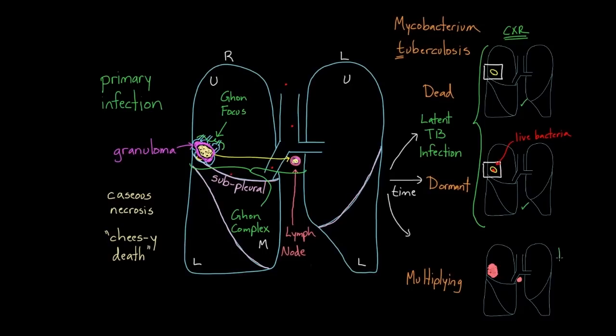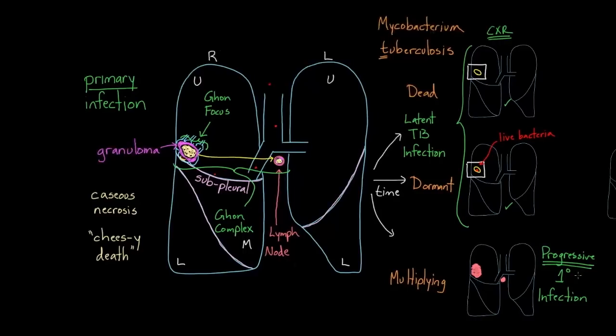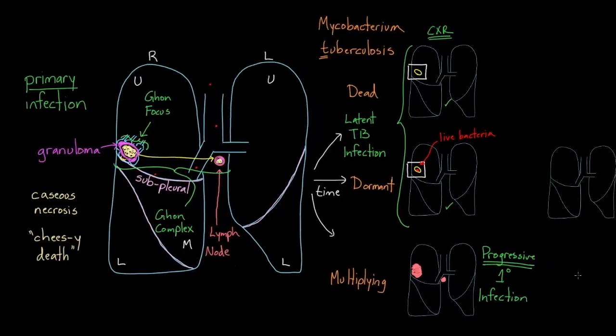And this scenario at the bottom is going to be called progressive, because things are slowly but surely getting worse. You can see more disease on the chest x-ray. Primary, with a 1 and a degree sign, infection. This is the name for this, progressive primary infection. So it sounds a lot like what we had named out here with primary infection, but the word progressive tells us that things are actually getting worse. The disease is getting more nasty.